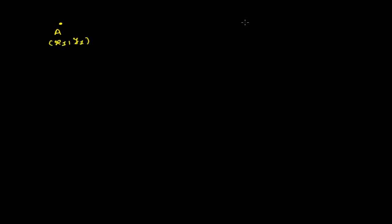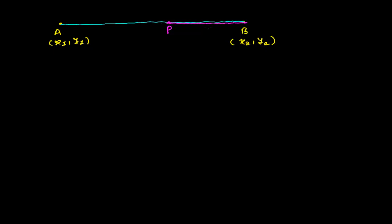In this video we're going to discuss about the ratios by which a line has been divided by a point. We have a point A having coordinate (x1, y1) and another point B having coordinate (x2, y2). Joining these two points gives line AB, and this line AB has been divided by a point P somewhere, into two pieces AP and PB, where P has coordinate (x̄, ȳ).